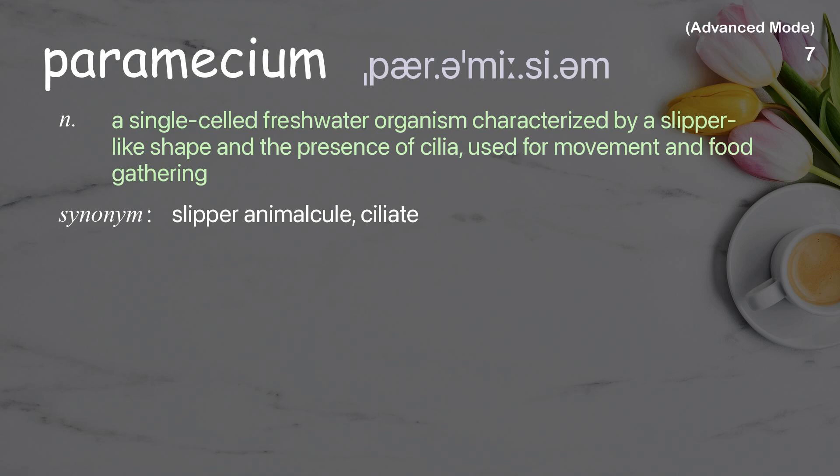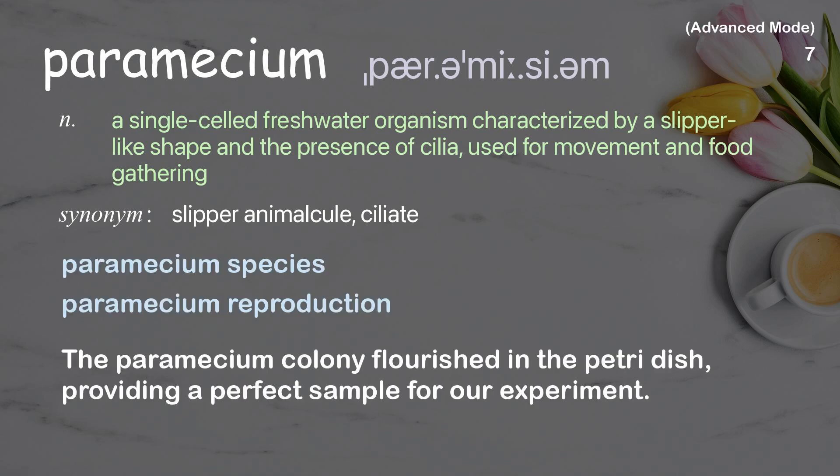Paramecium: A single-celled freshwater organism, characterized by a slipper-like shape and the presence of cilia, used for movement and food gathering. Examples: Paramecium species. Paramecium reproduction. The Paramecium colony flourished in the petri dish, providing a perfect sample for our experiment.